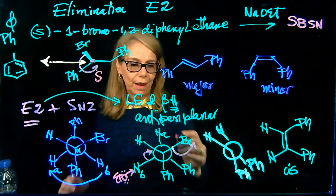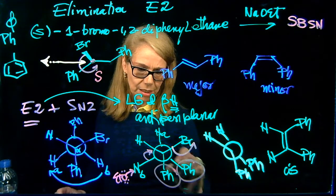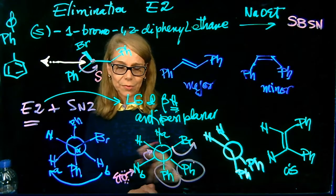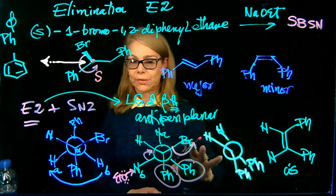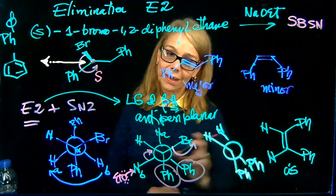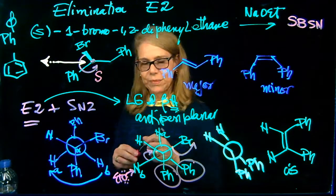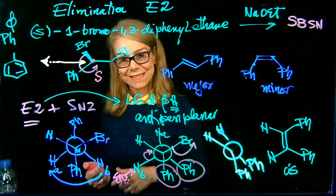that the conformation here has a lot of clashes here. It is a stagger, but it has two big groups next to each other. So this conformation is too high in energy. And this is why we don't get as much of the cis. The major product is the trans stilbene.